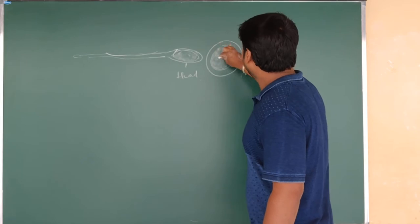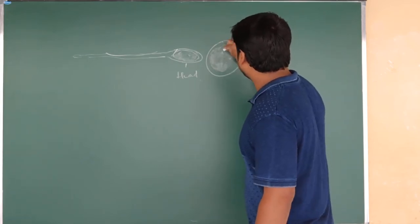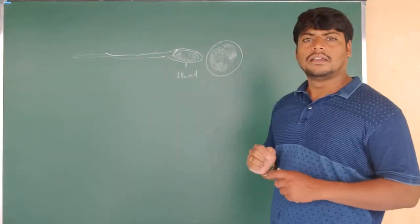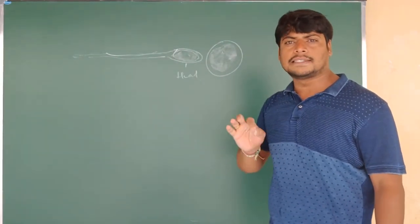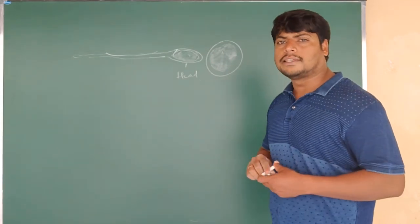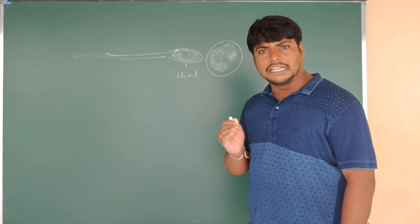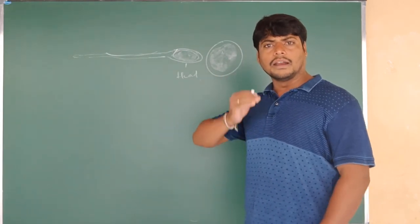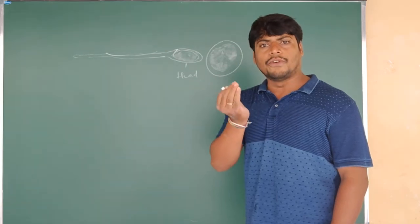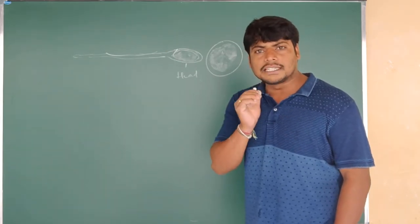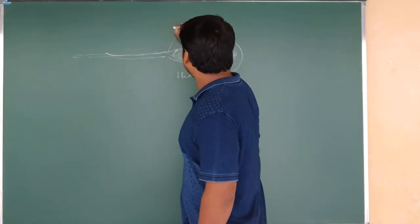During the process of sexual intercourse, the male and female organisms participate. The male organism deposits or releases male gametes in the form of semen, which consists of male gametes called sperm cells.